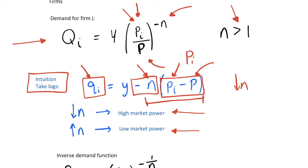To be precise: a high η gives a high elasticity of substitution and therefore low market power, because the good is very substitutable. A low η gives high market power because the good is not very substitutable.